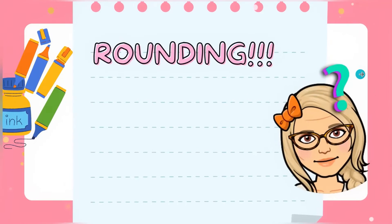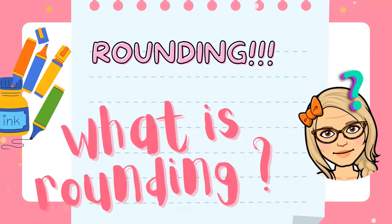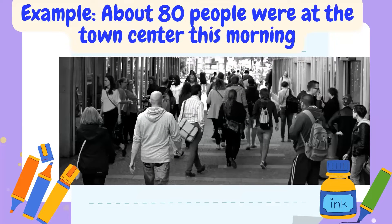What is rounding? What does rounding mean? How do we round? All those questions come to your mind when you hear the word rounding, right? To round a number, we have to follow many steps, and we have to be very careful because it tends to confuse us. So let's see what rounding is. When we want to say an amount but we don't know exactly the number — for example, about 80 people were at the town center this morning — I don't know exactly how many people were there, or I don't need to be so specific. So that is the time that I use rounding.